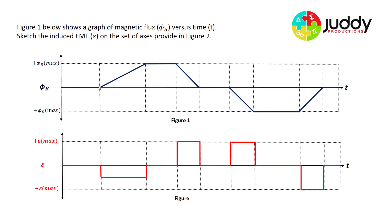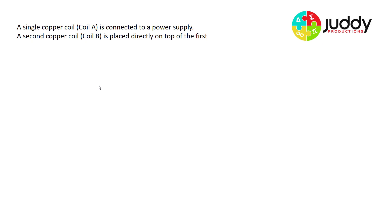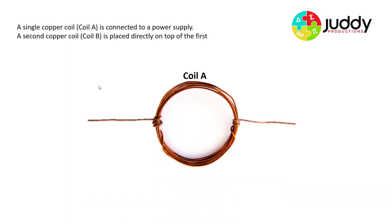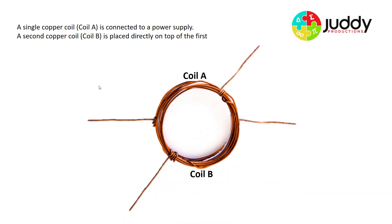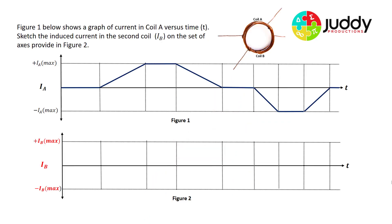And there we have it — the induced EMF has been sketched on the axes. Our final example: a single copper coil A is connected to a power supply. A second copper coil B is placed directly on top of the first. Figure one shows a graph of current in coil A versus time, and the task is to sketch the induced current in coil B on the axes in figure two.